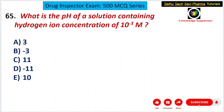Fifth question: what is the pH of a solution containing a hydrogen ion concentration of 10⁻³ molar? pH of a solution is represented by the equation: pH = −log[H⁺], the negative logarithm of hydrogen ion concentration.